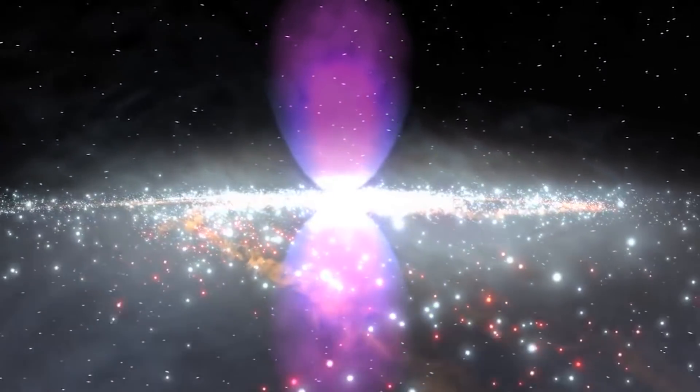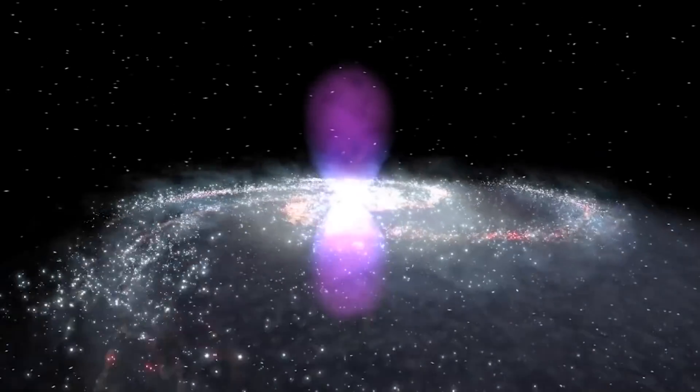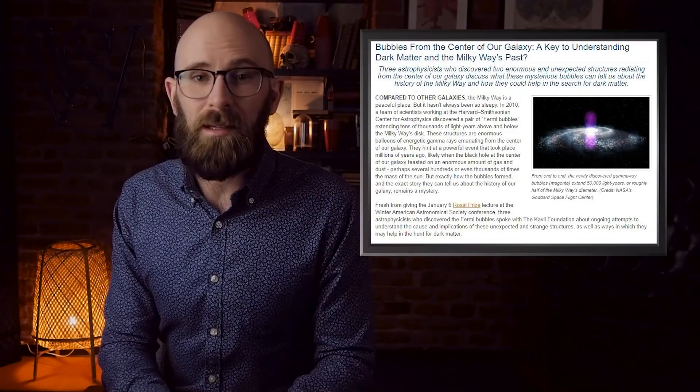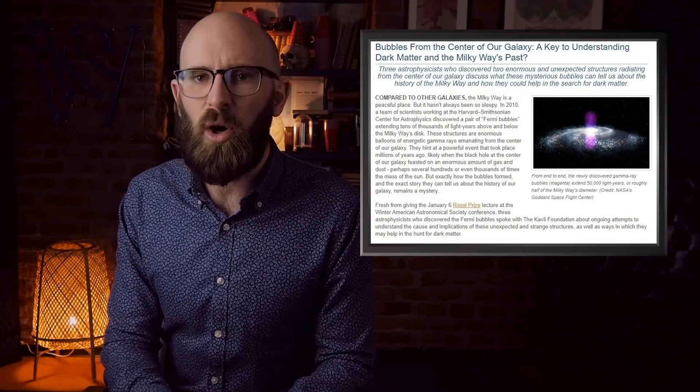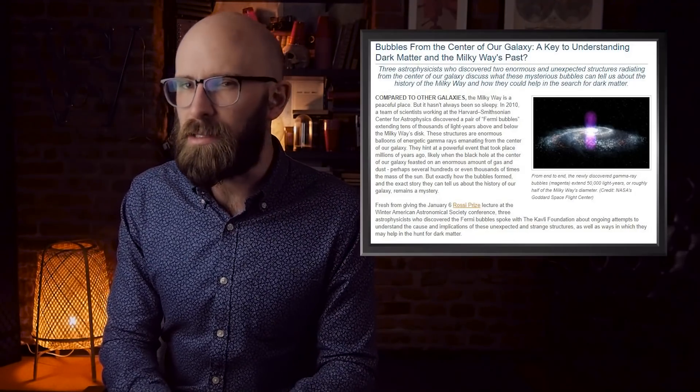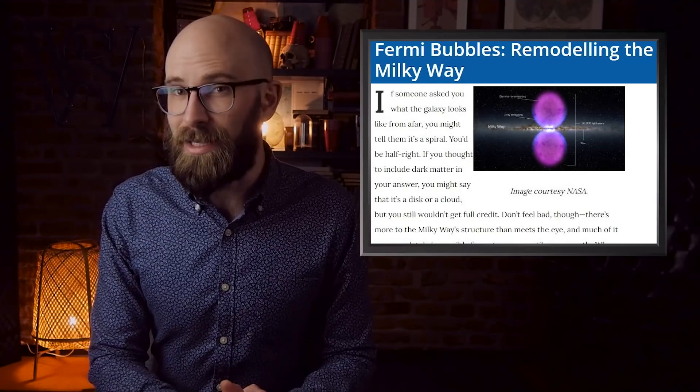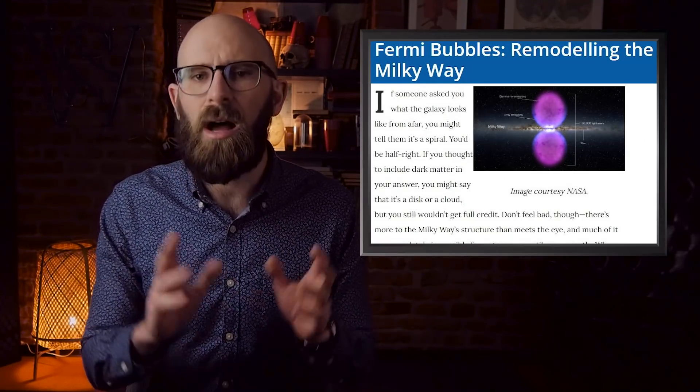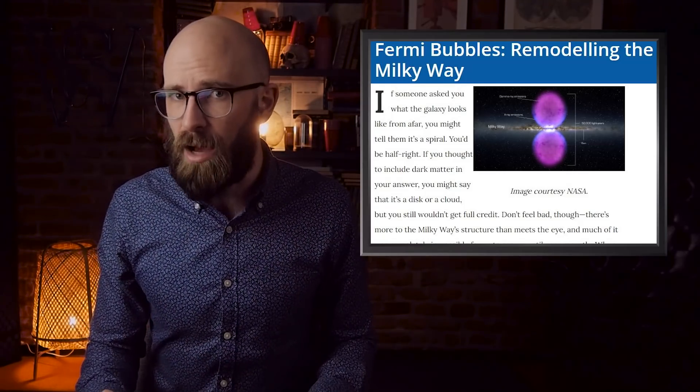To put how massive these Fermi bubbles are into perspective, Alpha Centauri is one of our closest neighboring stars at 4.3 light years away. To travel the distance that these Fermi bubbles take up, it would take 137,000 years at current speeds. But the eruption of nuclear energy from our supermassive black hole would have been much larger than the remnant it left behind, covering over 100,000 light years. The Milky Way galaxy is considered one of the most peaceful places in the universe. There are black holes in other galaxies that are far more powerful.